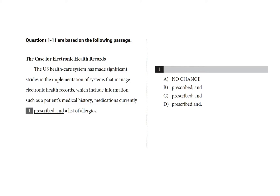Let's take a look at question one here, so I will read us in. The U.S. health care system has made significant strides in the implementation of systems that manage electronic health records, which include information such as a patient's medical history, medications currently prescribed, and a list of allergies.